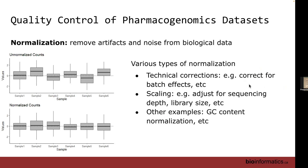The next concept is normalization — a process to remove artifacts and noise from biological data. When you're doing RNA-seq or arrays, these technologies are very sensitive. Even when running one single chip or array, you'll have biases introduced from chip placement, where the cell is on the chip, and things like that.